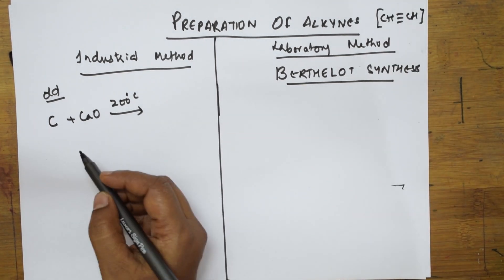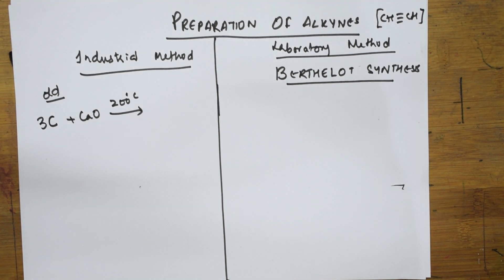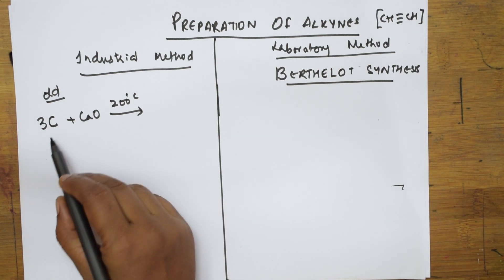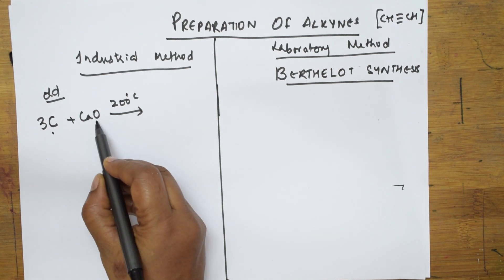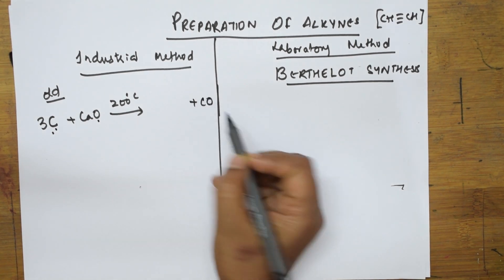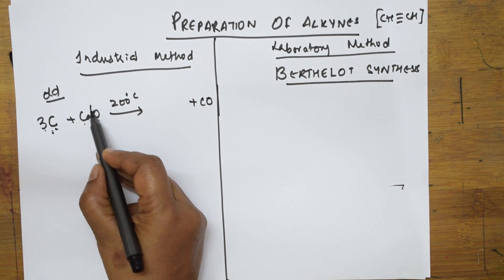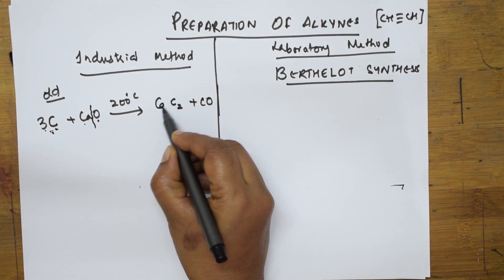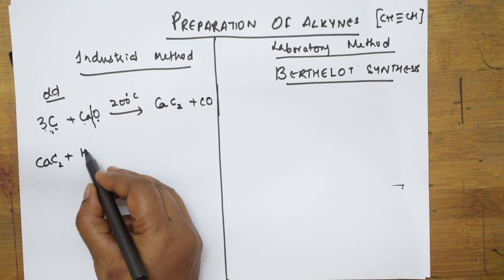To prepare acetylene, let's take three carbons or three coke. When heated at 2000 degrees centigrade, one carbon combines with the oxygen from calcium oxide and comes out as carbon monoxide. Two carbons are left and calcium is left. Two carbons written as C2 with the remaining calcium gives us calcium carbide.